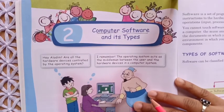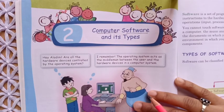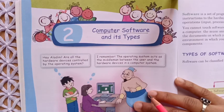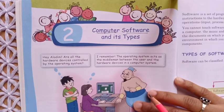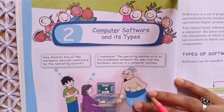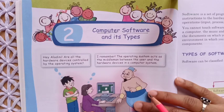For example, your operating system, MS Paint, MS Word — all these are software which are specially designed for doing any particular work. These are all a set of instructions which tell the computer how to do any work.